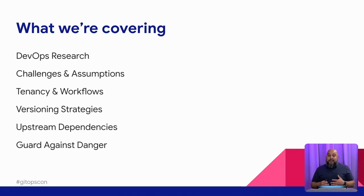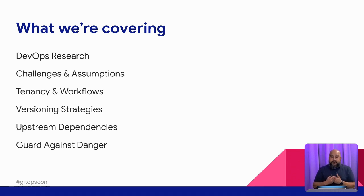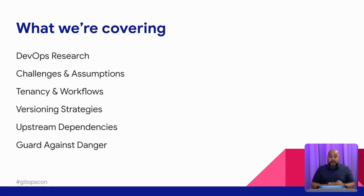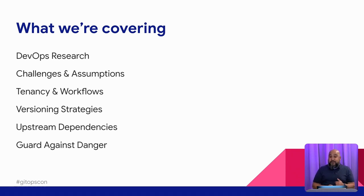There's quite a lot I want to cover today, so we're going to move through it pretty quickly. First, I want to share some of what we've learned through our own DevOps research, then lay out some basics around challenges and assumptions we'll use throughout. Then we'll jump into different cloud-native tenancy models and associated workflows, versioning strategies, how teams collaborate around upstream dependencies, and finally guardrails and preventing declarative and imperative operations from breaking things in prod.